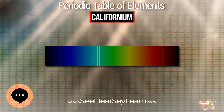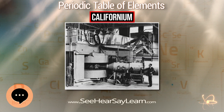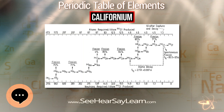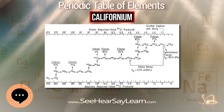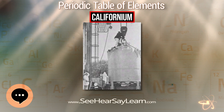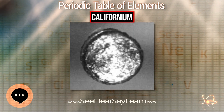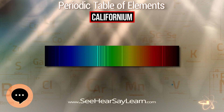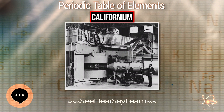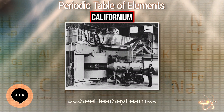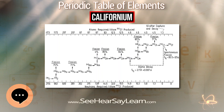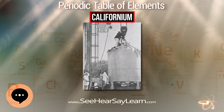Only two sites produce californium-252: the Oak Ridge National Laboratory in the United States and the Research Institute of Atomic Reactors in Dimitrovgrad, Russia. As of 2003, the two sites produce 0.25 grams and 0.025 grams of californium-252 per year respectively. Three californium isotopes with significant half-lives require a total of 15 neutron captures by uranium-238, without nuclear fission or alpha decay occurring during the process.